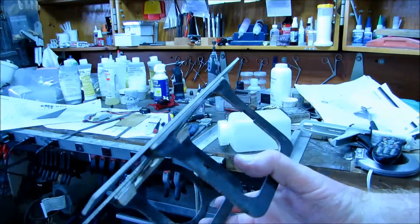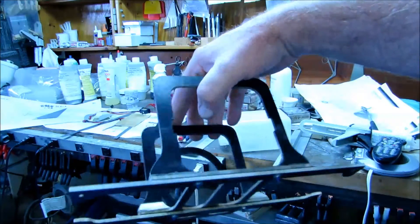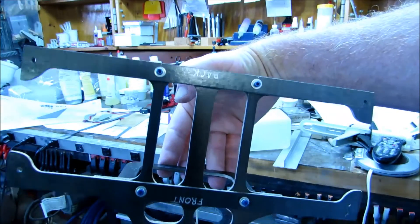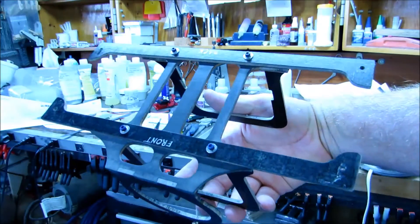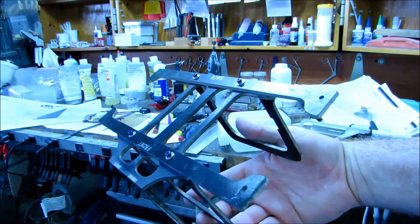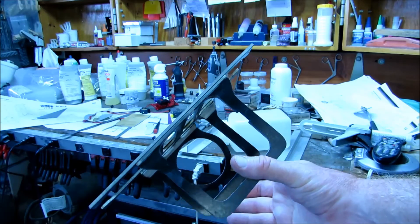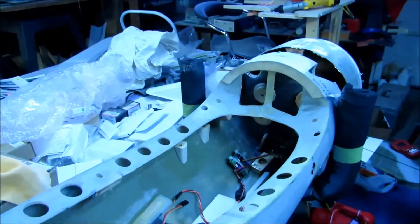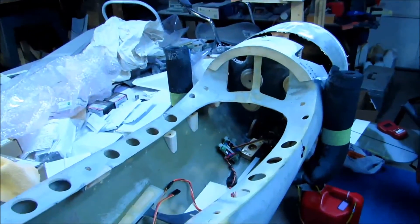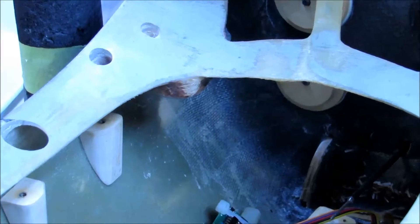This entire assembly that you see here weighs 44 grams. And it was designed with the intention of suspending my 32 ounce gas tank essentially in midair in the middle of my fuselage. So you can see these wooden bosses.